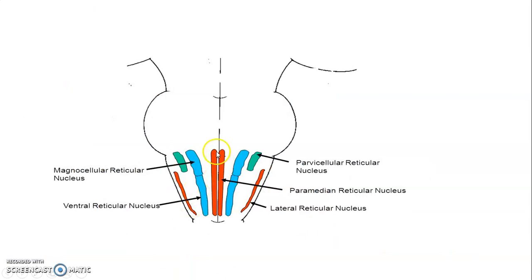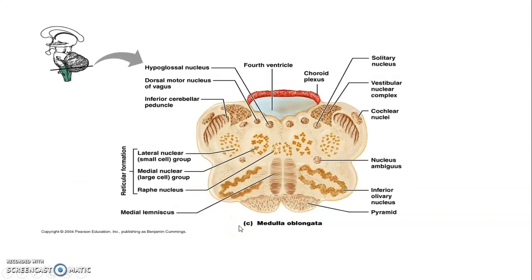The zones include the median raphe, paramedian with magnocellular reticular nucleus and caudal pontis nuclei with gigantocellular cells, and the parvocellular reticular nucleus of the lateral group. The distribution shows the lateral nuclear groups, the medial, and the median raphe.